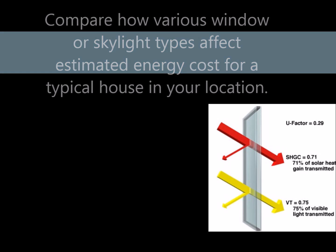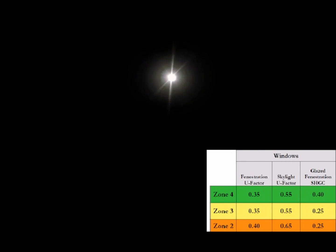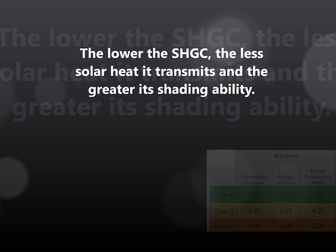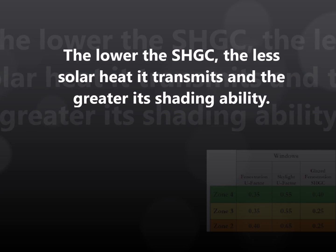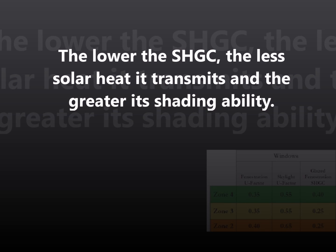Next we look at Solar Heat Gain Coefficient or the SHGC. A fraction of solar radiation admitted through a window, door, or skylight is transmitted directly and/or absorbed and subsequently released as heat inside your home. The lower the SHGC, the less solar heat it transmits and the greater its shading ability. A product with a high SHGC rating is more effective at collecting solar heat gain during the winter.